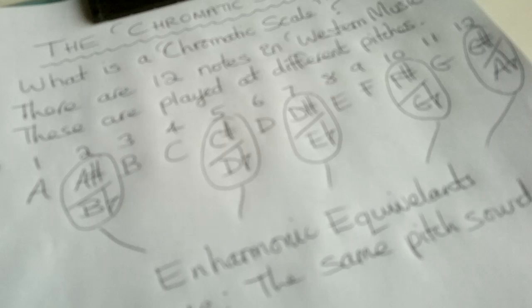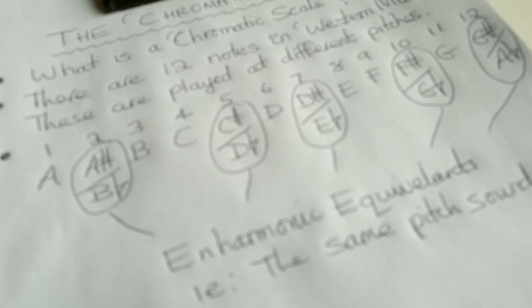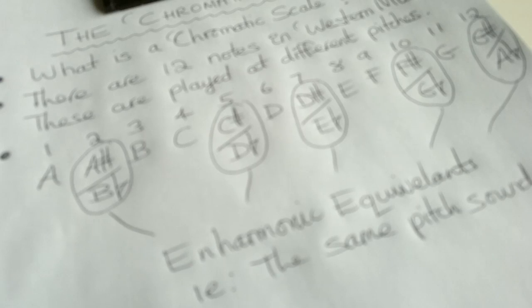Just before I draw up the keyboard diagram, I just want to point out that I don't really like the word 'scale' for the chromatic scale. What it really is is just a linear, straight, alphabetical list of 12 notes, including the enharmonic equivalents of sharps and flats.